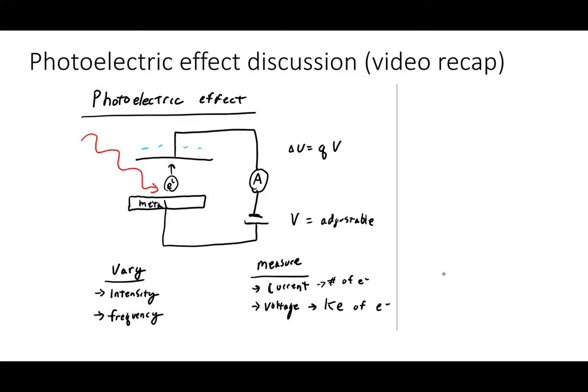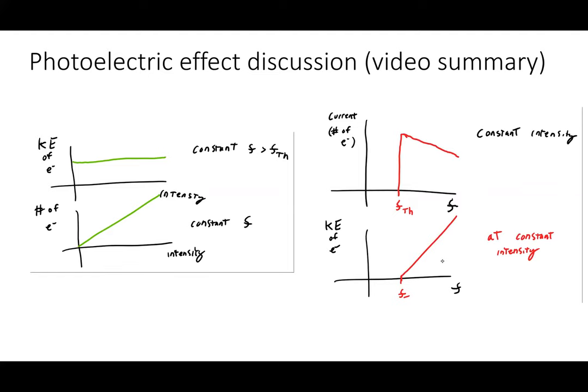My independent variables are the intensity and frequency of the light. Classically, we wouldn't expect changing the frequency to do anything, while increasing the intensity should be like increasing the power — increasing either the number or energy of the electrons freed. What we actually see is different: increasing the intensity keeps the energy of each individual electron constant while the number of electrons increases. There's no classical reason the kinetic energy should stay constant as incident energy increases.